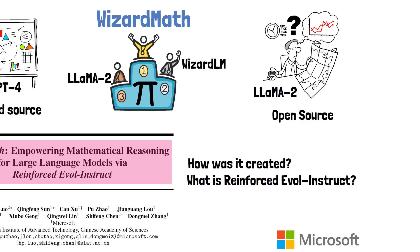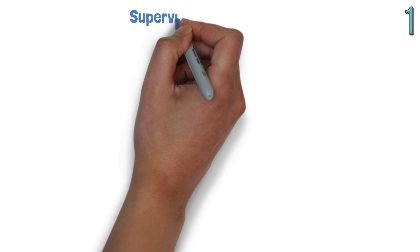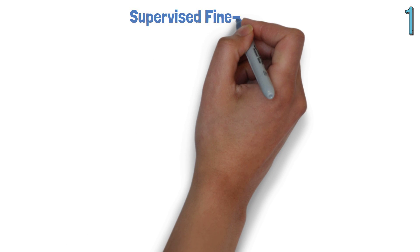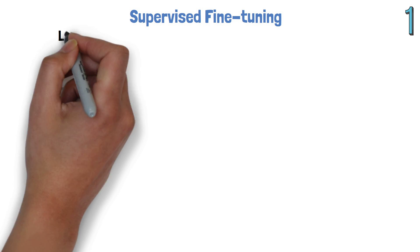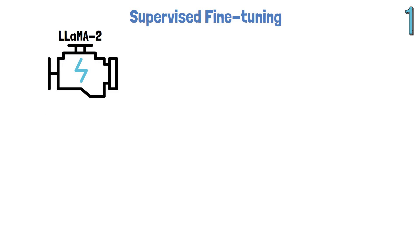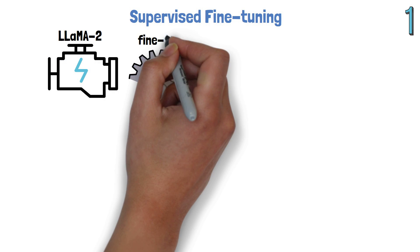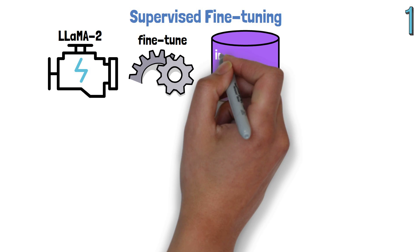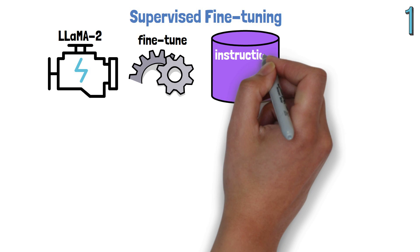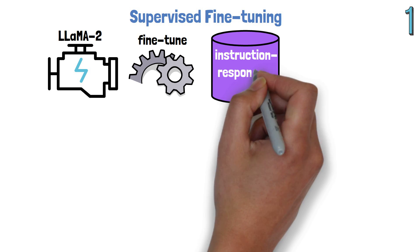WizardMath is created using 3 steps. The first step is supervised fine-tuning. In this step, we take the LLaMA2 model as the base model and fine-tune it on a dataset that the researchers constructed, which contains instruction and response pairs.